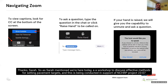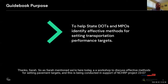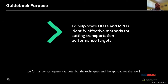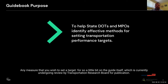Thanks, Sarah. As Sarah mentioned, we're here today to discuss effective methods for setting pavement targets. This is being conducted in support of NCHRP project 2307, which is developing a guide on that subject with the purpose of helping state DOTs and MPOs identify effective methods for setting their transportation performance targets, with a focus on the federal TPM or transportation performance management targets.